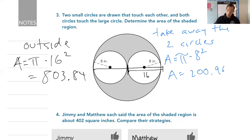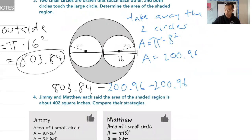Now, please don't forget, you're taking this one right here, 803.84, and you're going to subtract 200.96. You're going to subtract it away twice. So type this into your calculator, 803.84, subtract away 200.96, then subtract away 200.96 again, and you will end up with 401.92 inches squared.